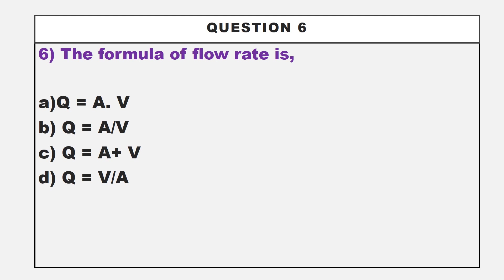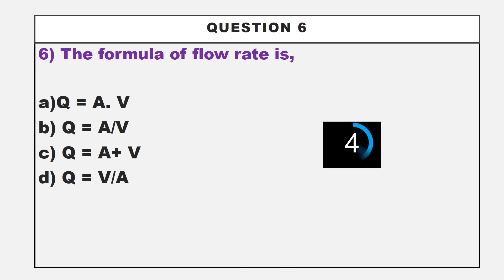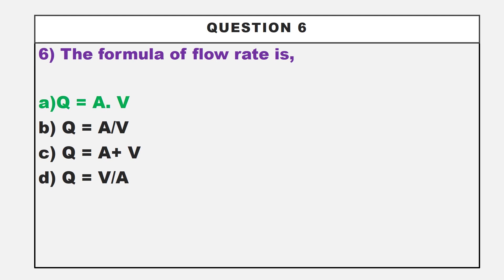Moving on to question number 6: the formula of flow rate is dash. Option A: Q equals A times V. Option B: Q equals A divided by V. Option C: Q equals A plus V. Option D: Q equals V divided by A. The answer is option A, Q equals A times V. Here Q is the flow rate, V is the velocity of the fluid, and A is the cross-section of the pipeline.